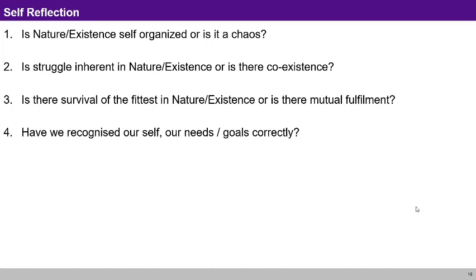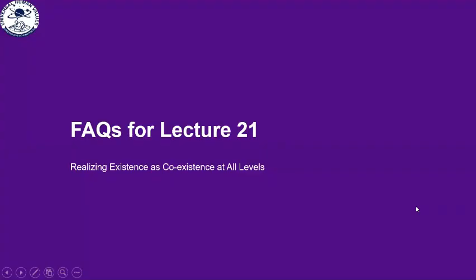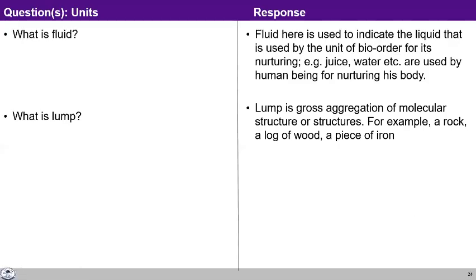We can take up questions in relation to what has been discussed in harmony in existence, the lectures of which we have briefly mentioned the essence. In the chart on the expression of coexistence, there is mention of fluid and lump. Could you explain that? We are using the word fluid in a specific sense to indicate the liquid used by the unit of bio-order for its nurturing. This is how the physical order connects to the bio-order.